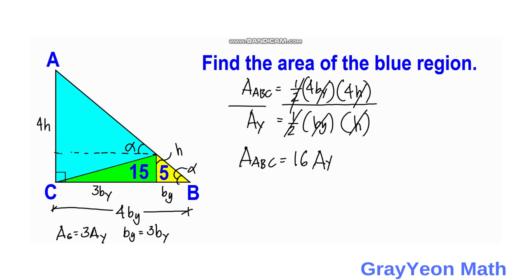And we can get actually the area of triangle ABC. So triangle ABC, area of ABC is equal to 16 times Ay which is 5, and therefore area of triangle ABC is actually 80 square units.